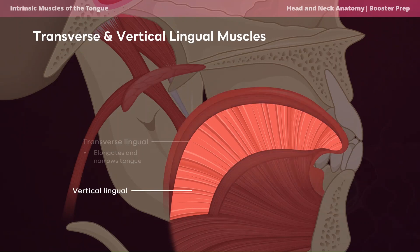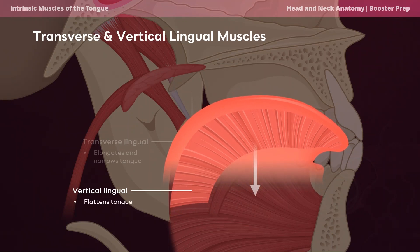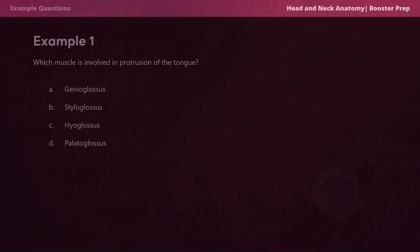The vertical lingual muscle fibers run vertically in an inferior to superior fashion, and this muscle works to flatten the tongue.